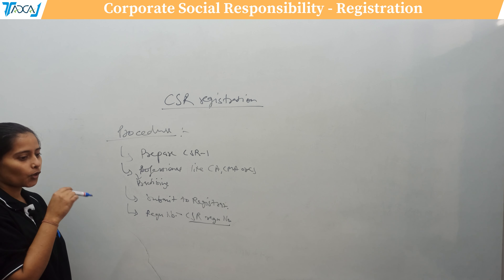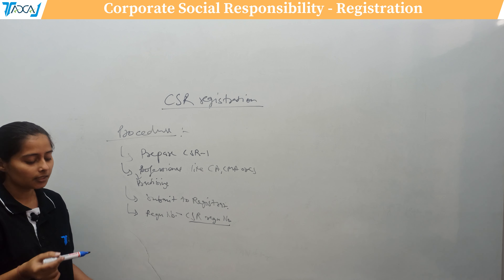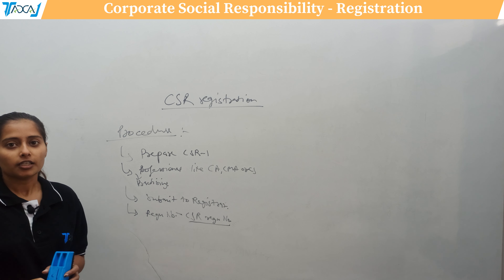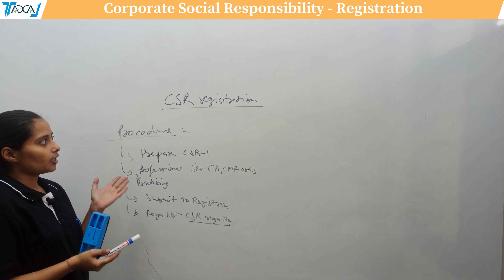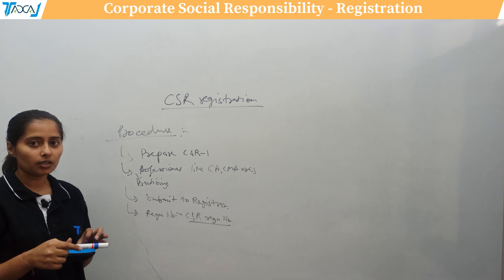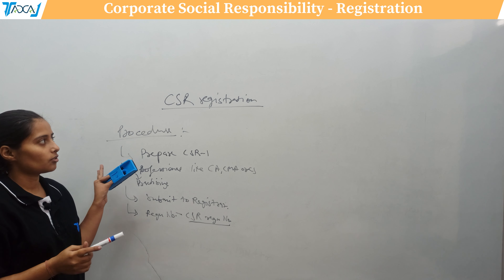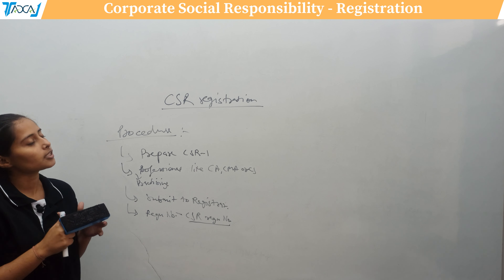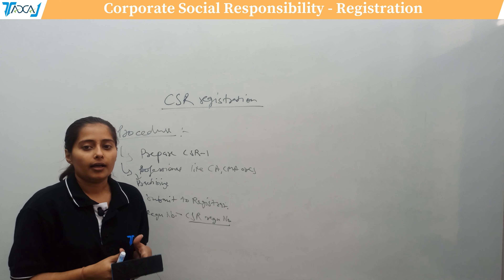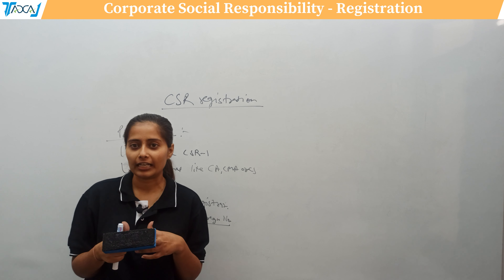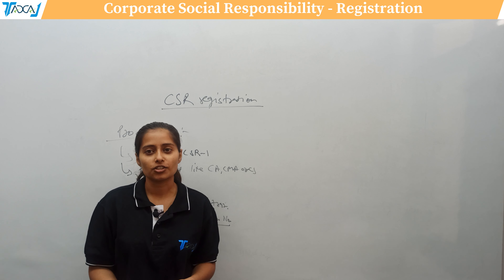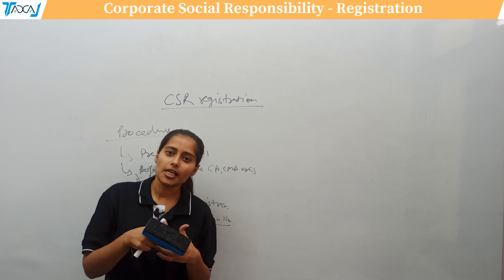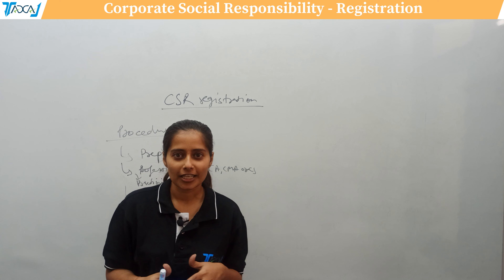So that was the complete process of CSR registration — covering the process, applicability, eligible establishments (Section 8 companies, trusts, and societies), and the mandatory requirement to complete MCA registration by filing CSR-1 with the Registrar before receiving corporate funding. I hope it is clear. Please like, share, and comment on the video, and subscribe to our channel to stay updated. Thank you.